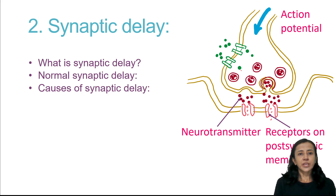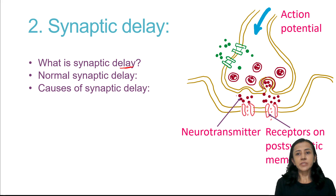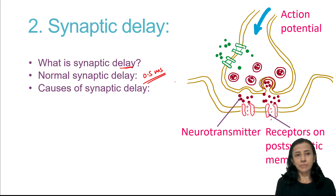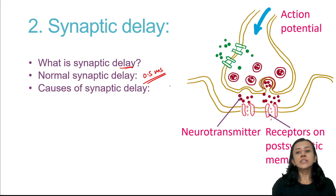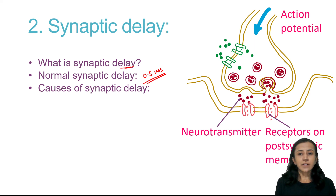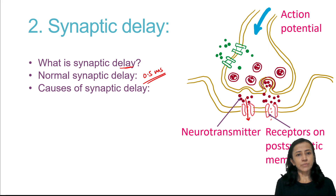The second property is synaptic delay — the time required for the passage of impulse through the synapse. Normal synaptic delay is about 0.5 milliseconds. Causes include: time required for neurotransmitter release, diffusion into the synaptic cleft, reaching the postsynaptic membrane, binding with receptors, and opening of sodium channels for sodium ion entry. All these events require time.